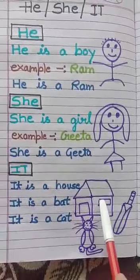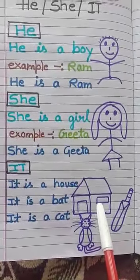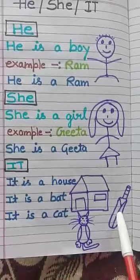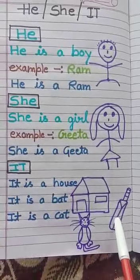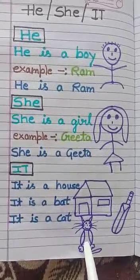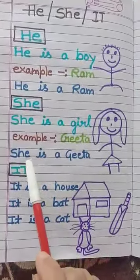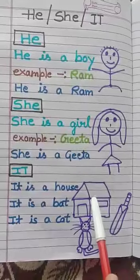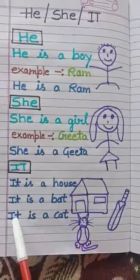The first picture is of a house. House is a boy or a girl? Neither — house is not a boy or a girl. House is a place. The second picture is of a bat. Bat is neither a boy nor a girl. Bat is a thing. The third picture is of a cat. Cat is an animal. It is a house. It is a bat. It is a cat.